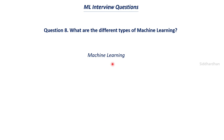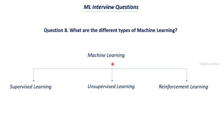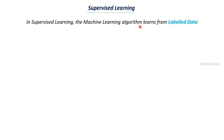The eighth question is: what are the different types of machine learning? The different types are supervised learning, unsupervised learning, and reinforcement learning. In supervised learning, the machine learning algorithm learns from labeled data — labeled data is the important aspect of supervised learning. In unsupervised learning, we use an unlabeled dataset. Let's first understand supervised learning.